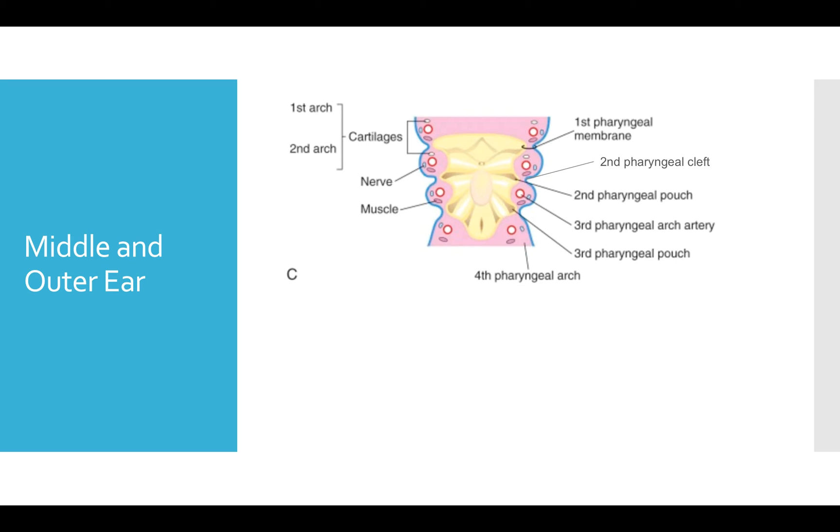So the pharyngeal apparatus is made up of arches, pouches, clefts, and membranes. The pharyngeal arches are made up of cartilage, an artery, an associated cranial nerve, as well as muscle.